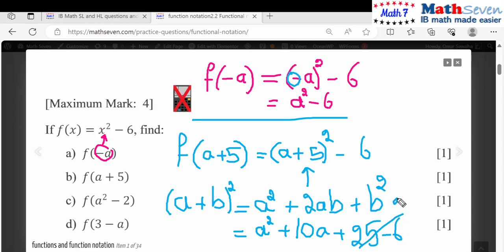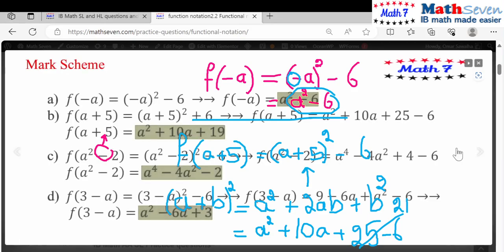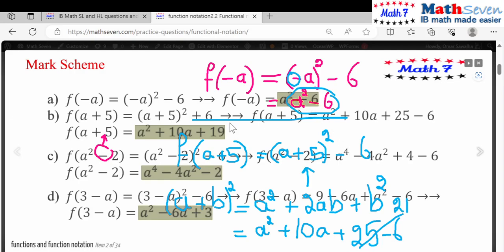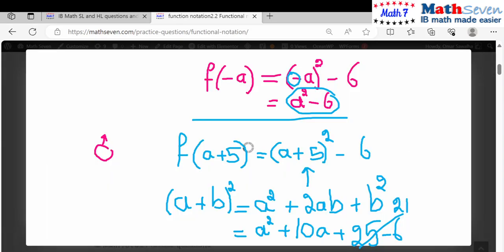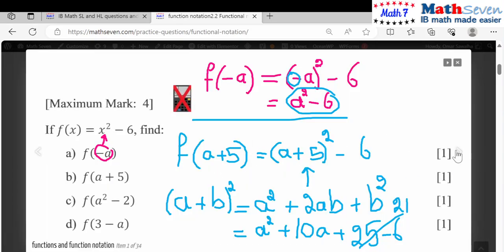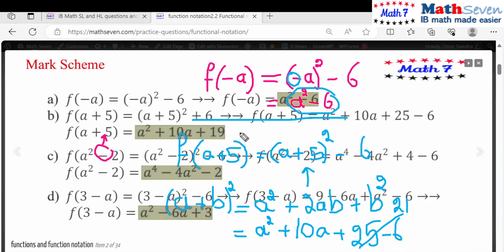There you go minus 6, don't forget the minus 6. So this will become 19. Let me erase this and check the mark scheme. Before I erase, a squared minus 6 and for this one, sorry it's 19, yes, not 21 because minus 6. My mistake, the mark scheme is correct, so it is 19.